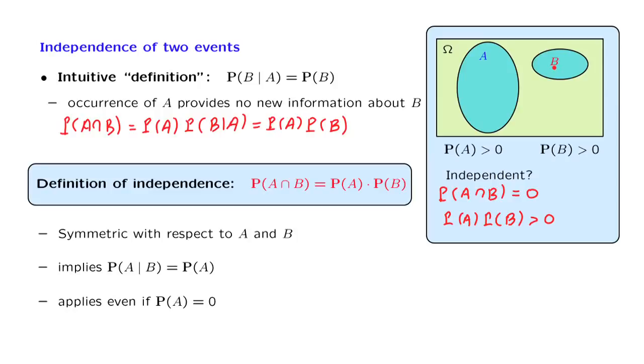When do we have independence in the real world? The typical case is when the occurrence or non-occurrence of each of the two events A and B is determined by two physically distinct and non-interacting processes. For example, whether my coin results in heads and whether it will be snowing on New Year's Day are two events that should be modeled as independent.